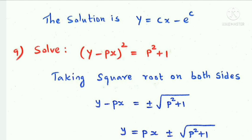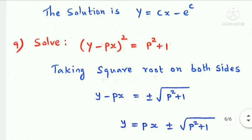Next question: solve (y - px)² = p² + 1. Taking square root on both sides gives y - px = ±√(p² + 1). Therefore y = px ± √(p² + 1), which is in Clairant's form.